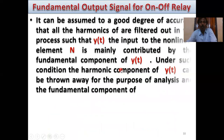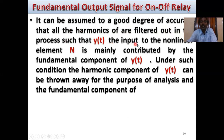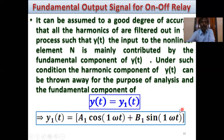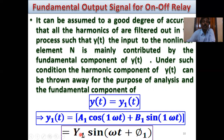Fundamental output signal for On-Off relay: It can be assumed to a good degree of accuracy that all the harmonics are filtered out, so y(t) is mainly contributed by the fundamental component y₁(t). Under such conditions, the harmonic components can be discarded, and the fundamental component is y₁(t) = a₁ cos(ωt) + b₁ sin(ωt) for n = 1, which gives y₁(t) = Y₁ sin(ωt + φ₁). This is the fundamental output.